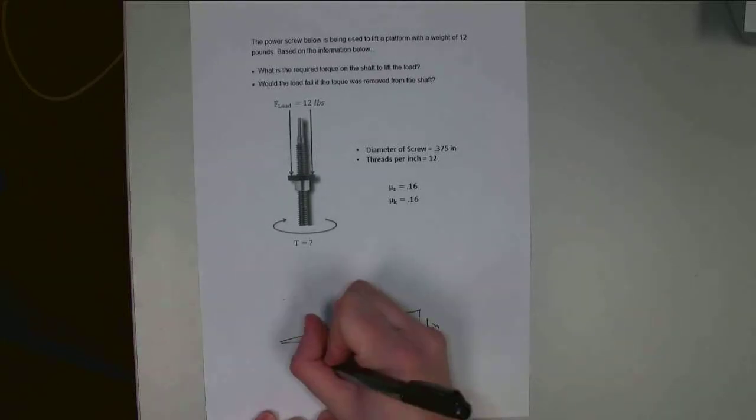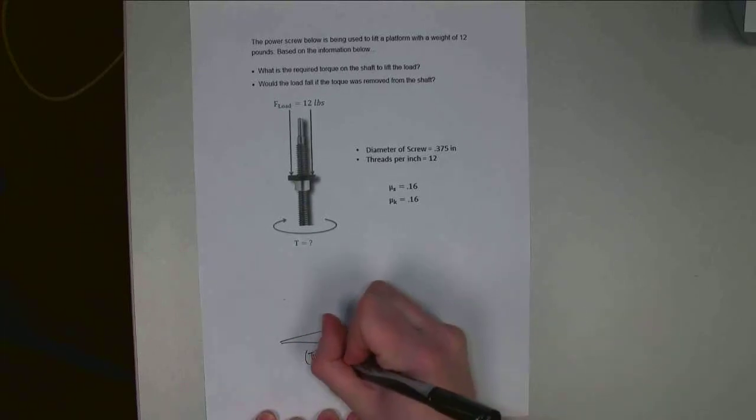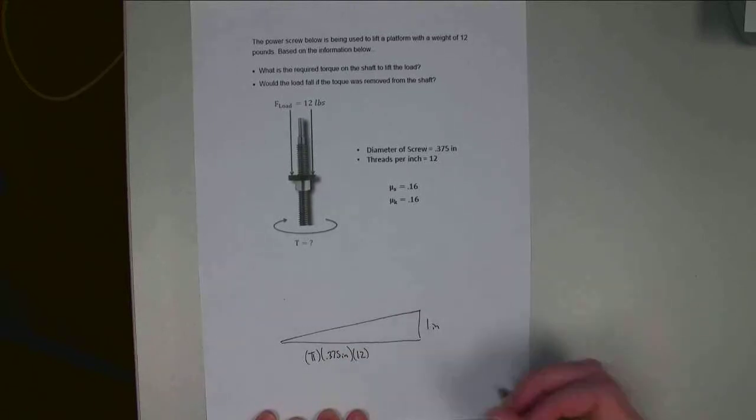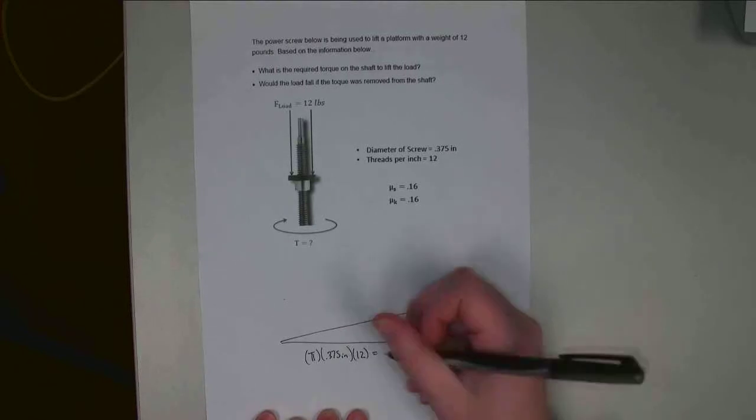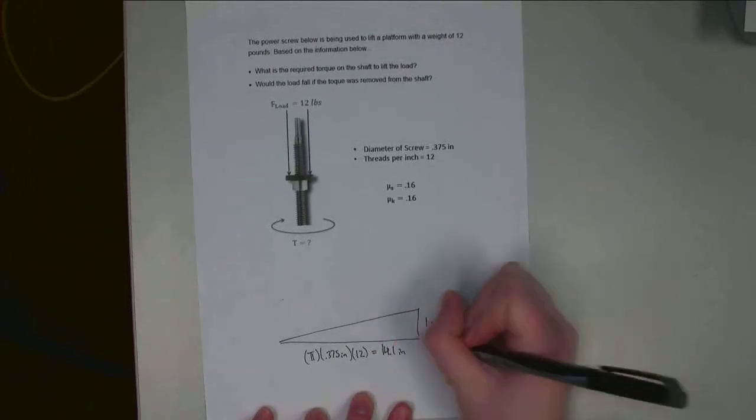That means I've got pi times the diameter, 0.375 inches, times 12, because I go around 12 times for each inch I go up. So I go around the screw a distance of 14.1 inches for every one inch I go up.